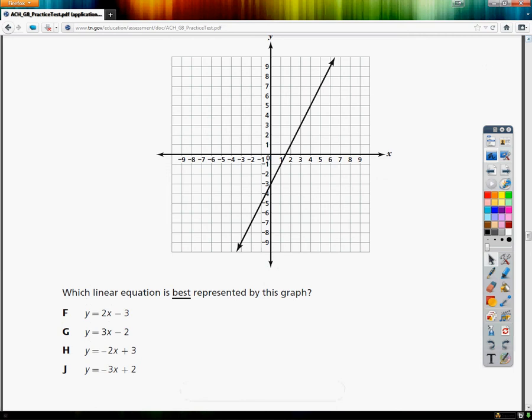In order to be able to do this, you have to know a little bit about how graphs are set up. When you have y by itself, which all the answer choices do, you're in what's called slope-intercept form.